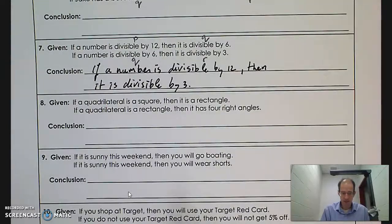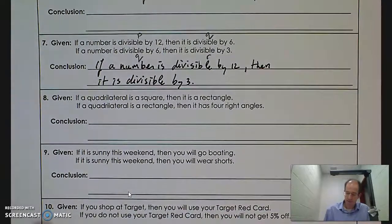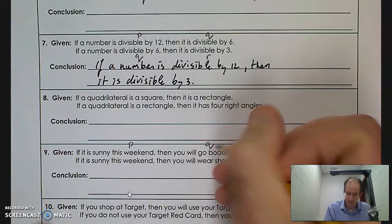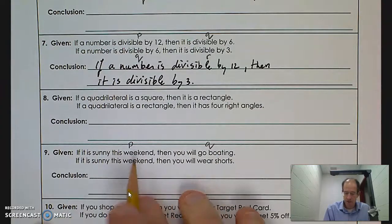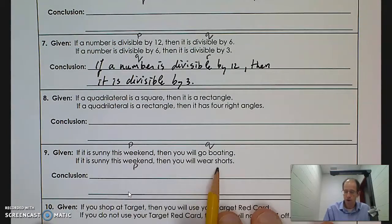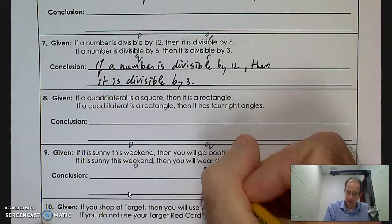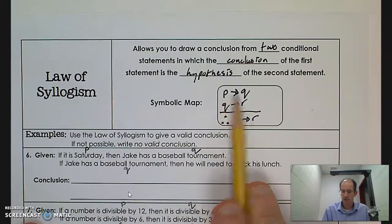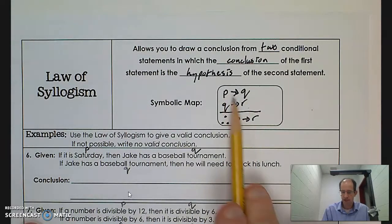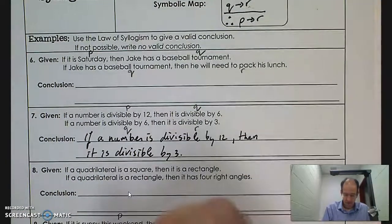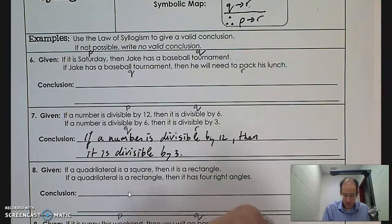Question nine: if it is sunny this weekend, that's my p, then you will go boating — that's q. The second statement says: if it is sunny this weekend — that's also p — then you will wear shorts — that's r. This gives us 'if p then q' and 'if p then r,' which does not match the law of syllogism pattern of 'if p then q, if q then r.' So no valid conclusion can be drawn.